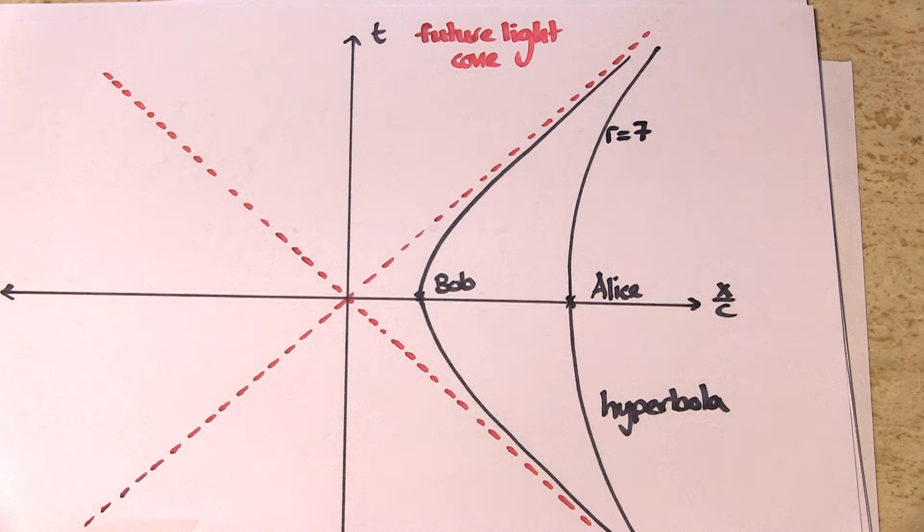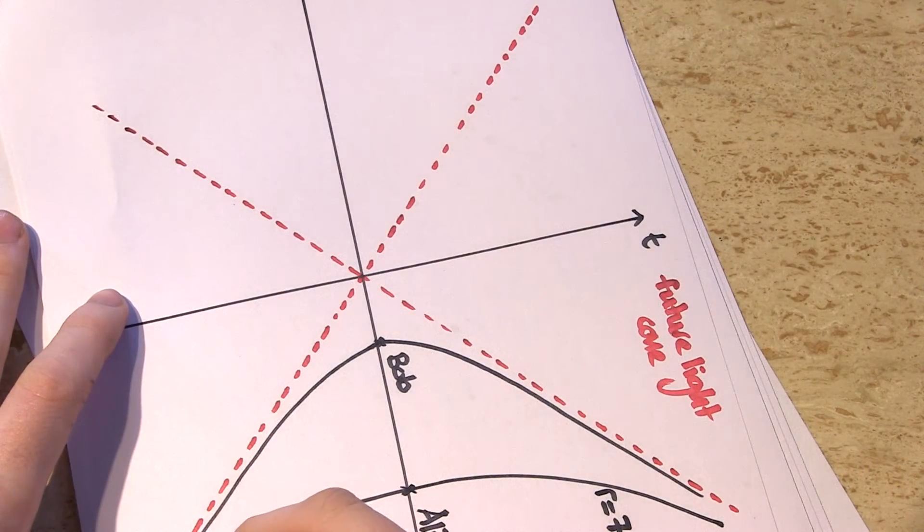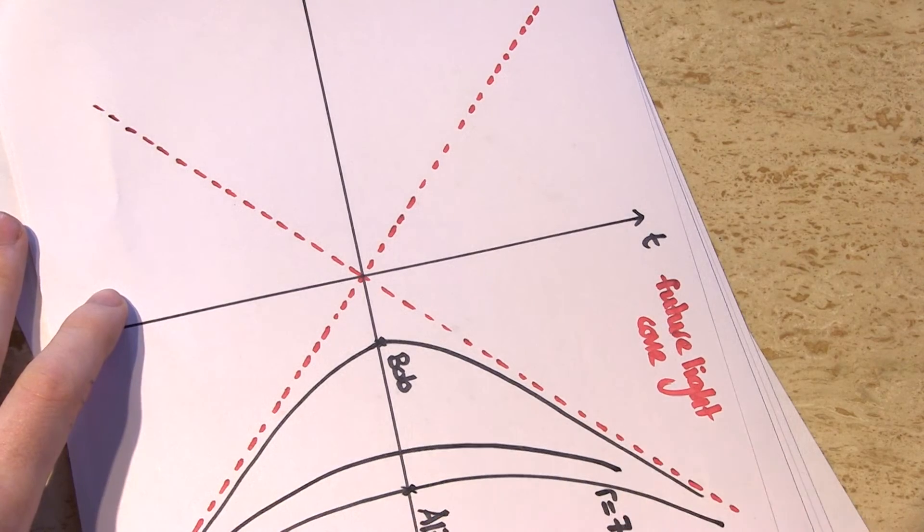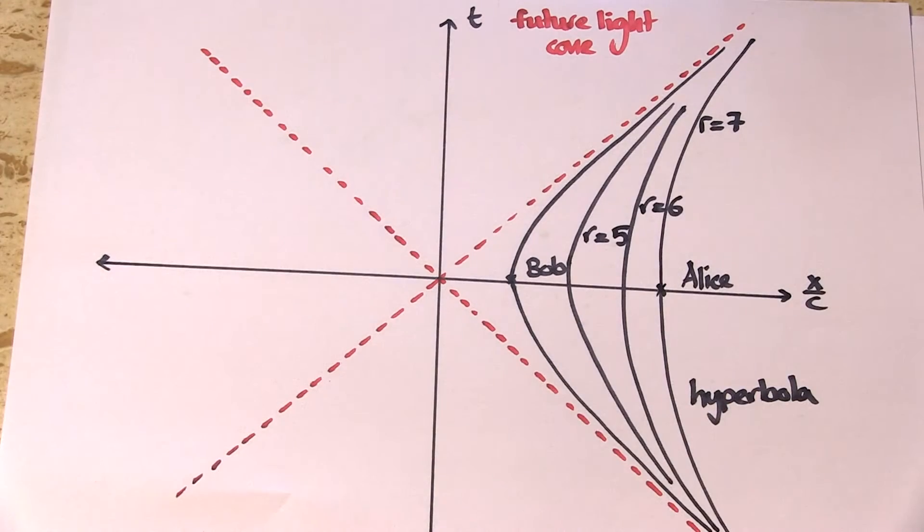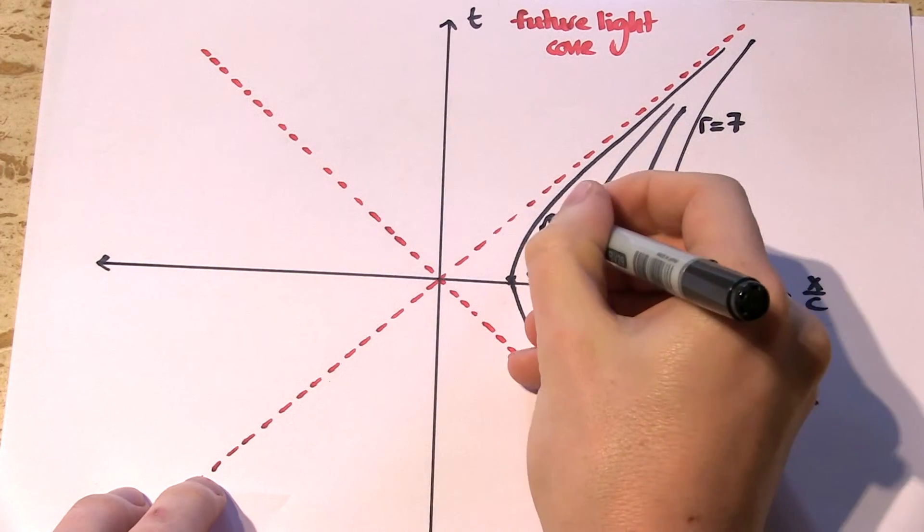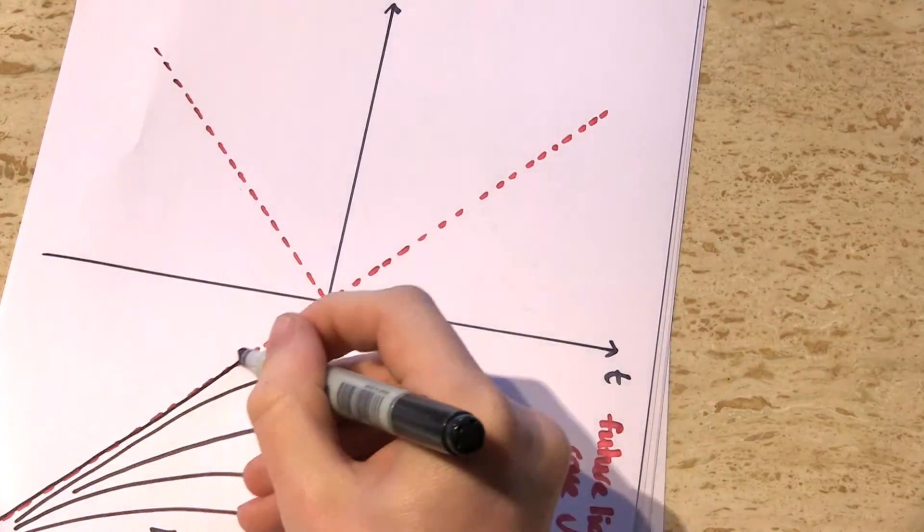Bob was accelerating even harder than Alice, and so experienced a greater force, so Bob must be closer to the black hole than Alice. Let's draw in some hyperbolas of constant height above the black hole. Here's the hyperbola of height 6, and here's the one of height 5. So Bob is at height 4 above the black hole.